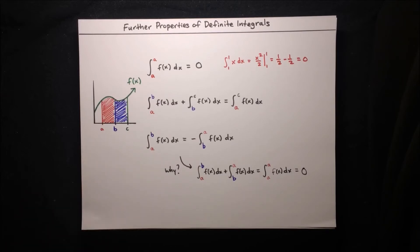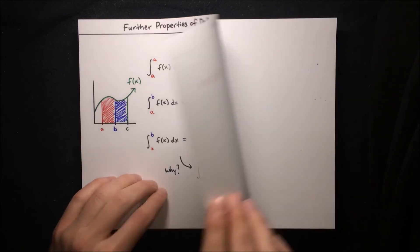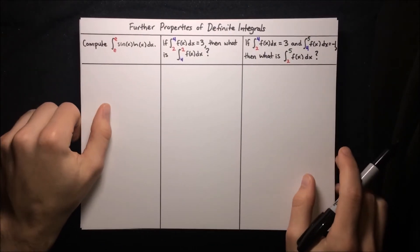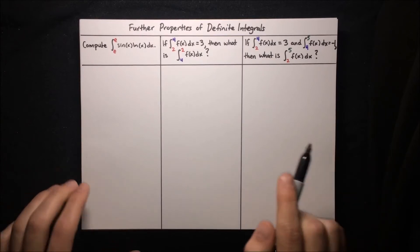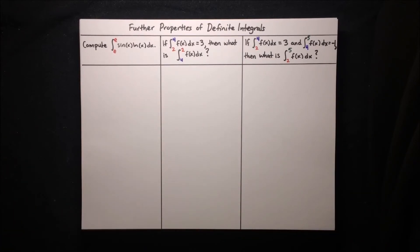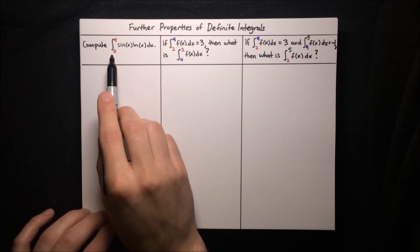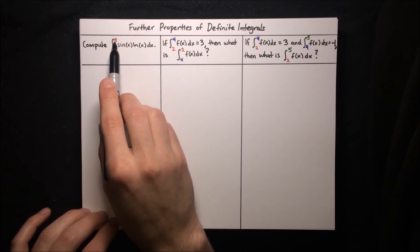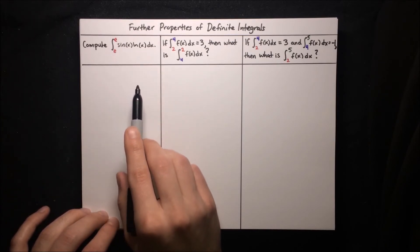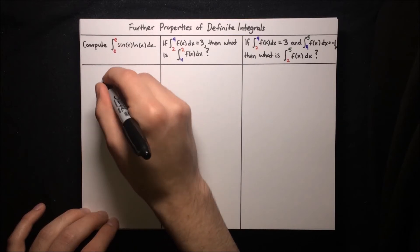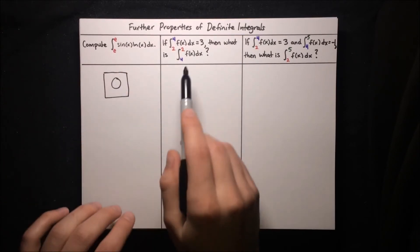Now that we've been introduced to these properties, let's see them in action. Our first problem is to compute the integral from e to e of sine(x) times natural log(x) dx. That seems like a pretty tough integral, but we don't have to compute the antiderivative. The bounds run from e to e, so the region of integration is just a line segment, and line segments always have area of zero.